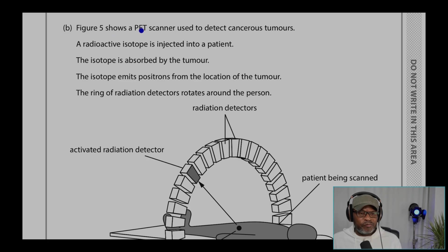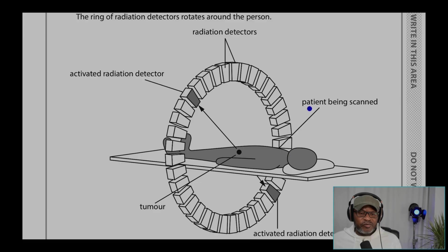Question 4B. Figure 5 shows a PET scanner used to detect cancerous tumors. A radioactive isotope is injected into a patient. The isotope is absorbed by the tumor. The isotope emits positrons from the location of the tumor. A ring of radiation detectors rotates around the person. And here is the person there, patient being scanned. Active radiation detector, this one here that rotates. And here is a tumor.